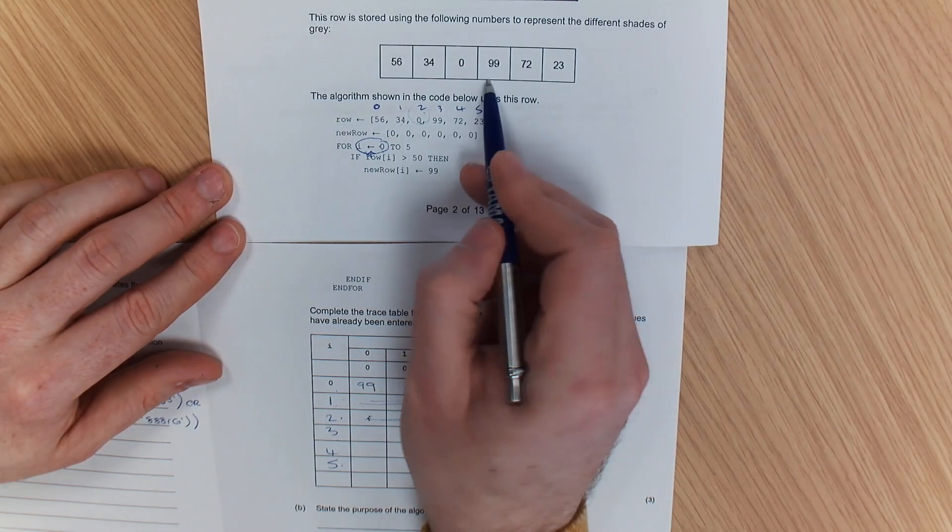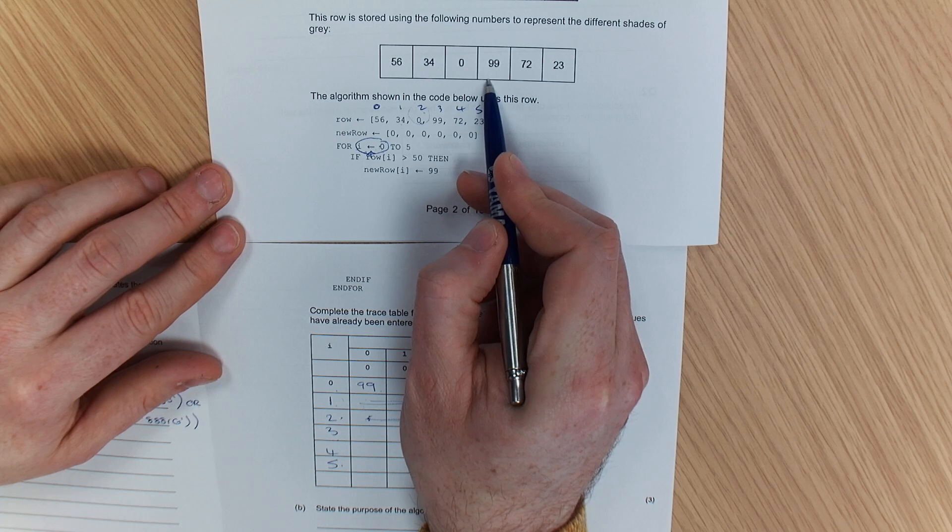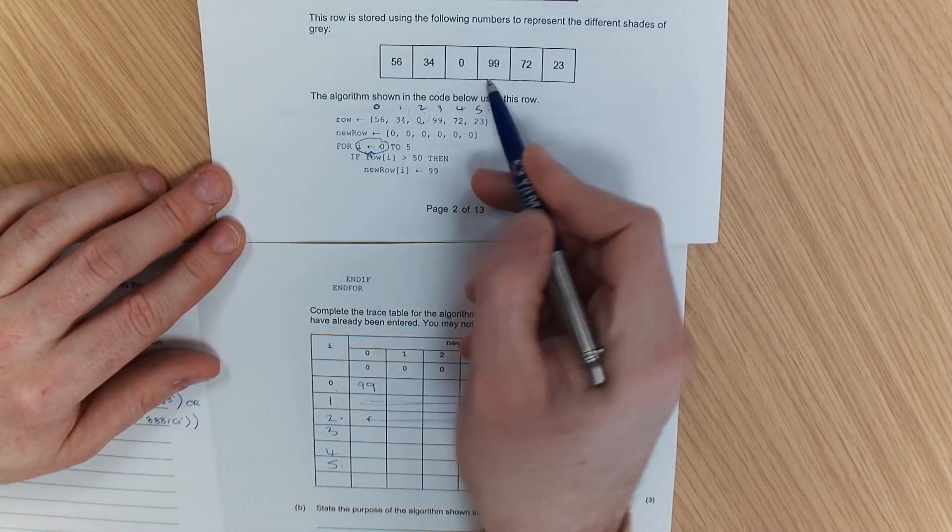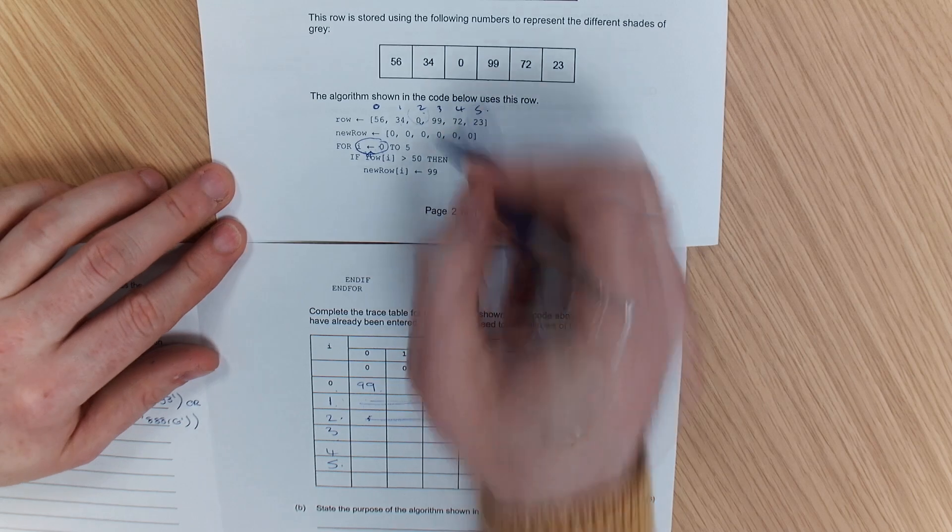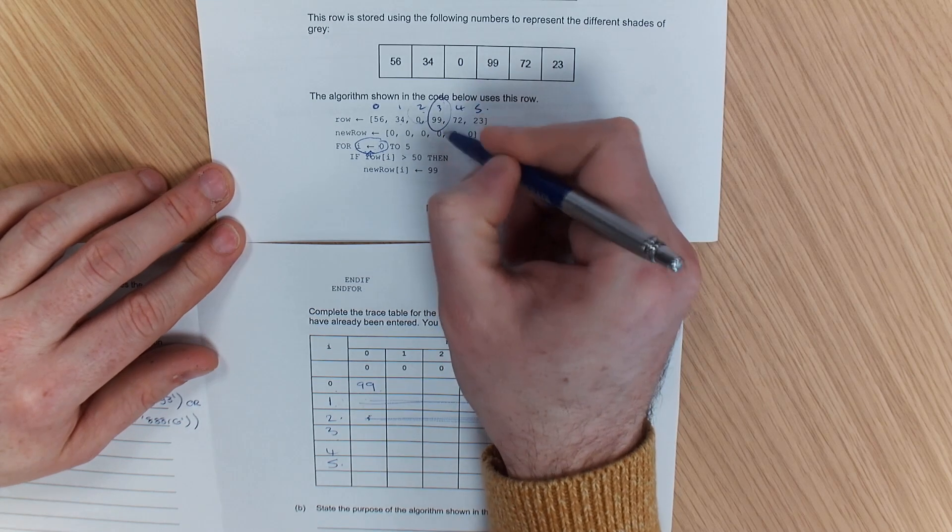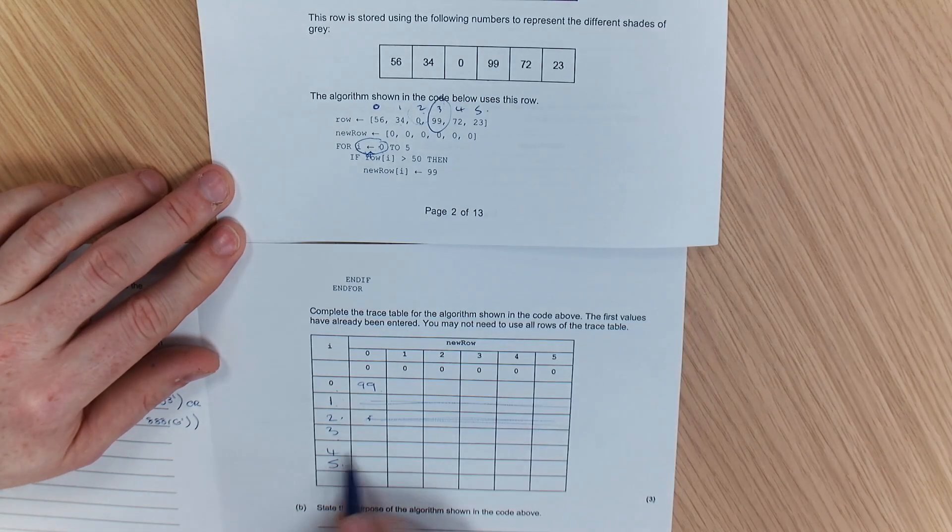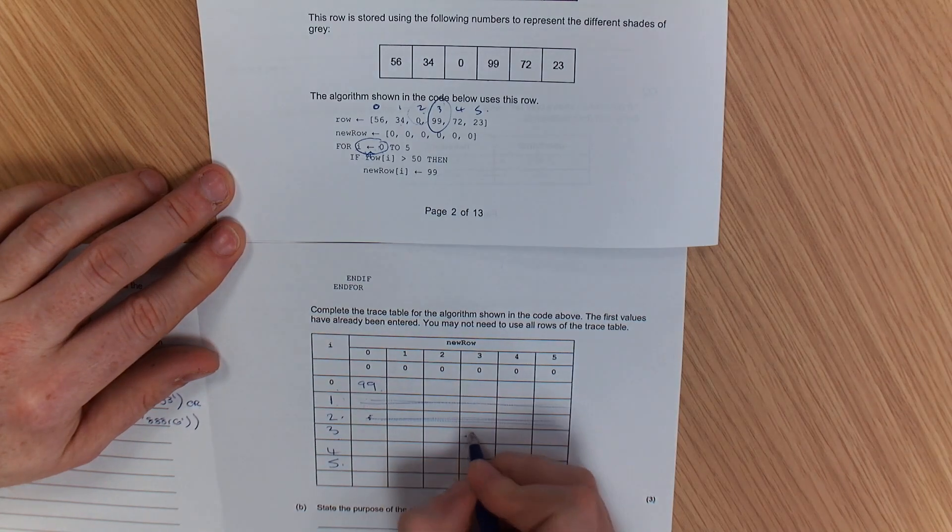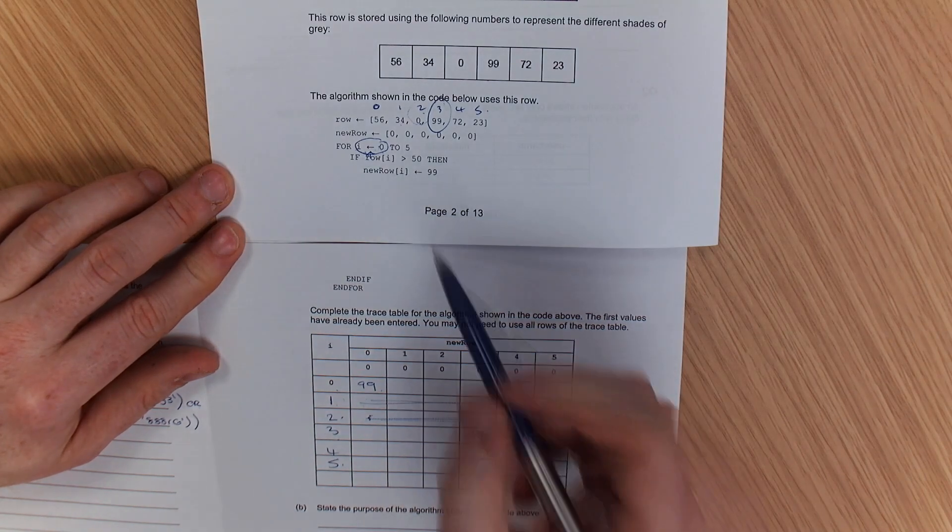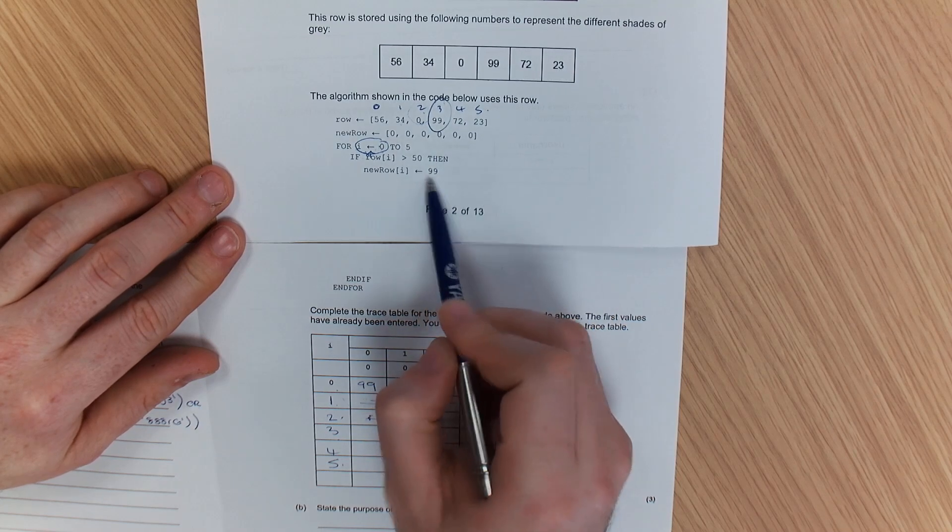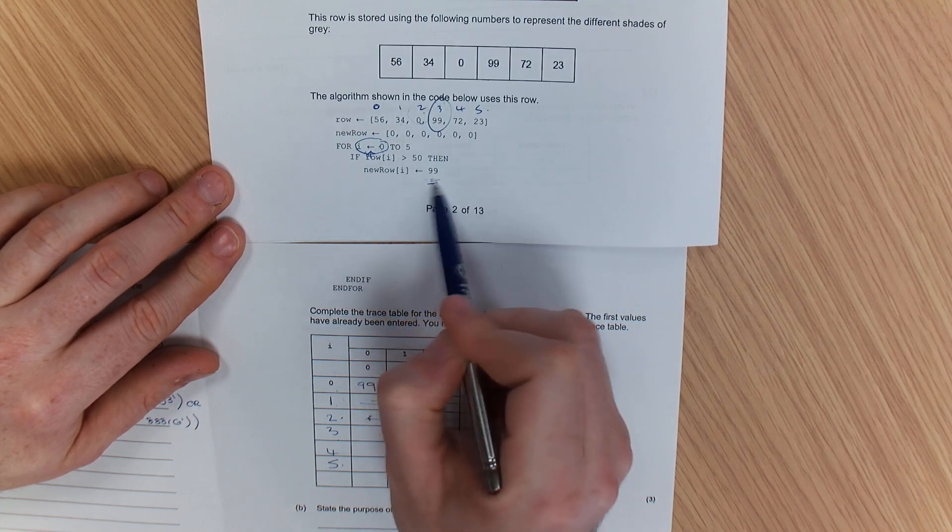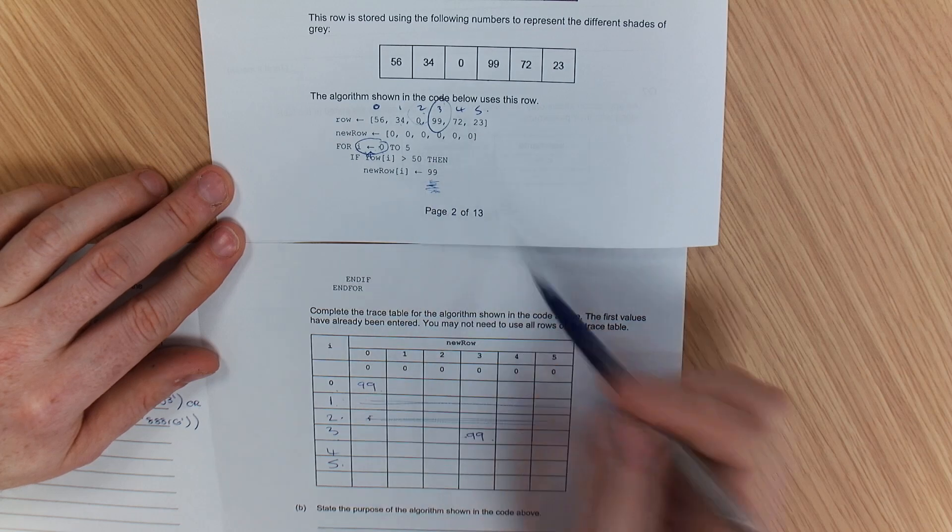Is 99 higher than 50? Yeah. So which position are we in? 3. Pay attention to it. So I'm going over to 3, 99. And I'm not writing 99 in because that's the value in there. It's because my rule says, if it's greater than 50, I need to write in the number 99.